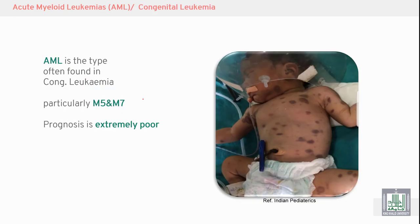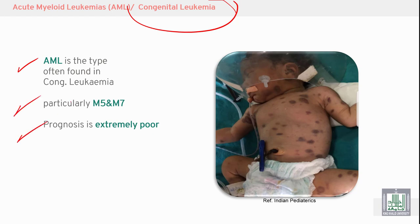Congenital leukemias — babies born with leukemia — can occur. In AML, M7 is a type particularly found in congenital cases, and the prognosis or outcome is extremely poor.